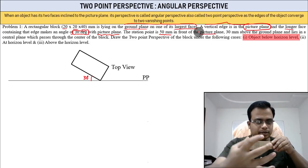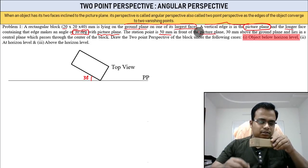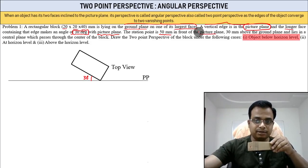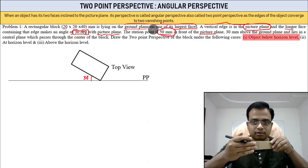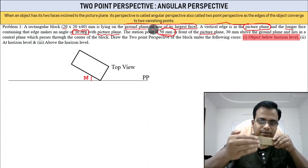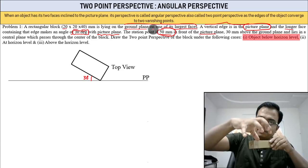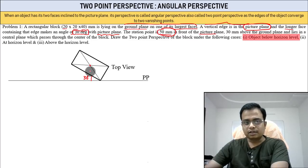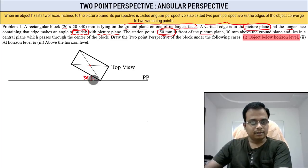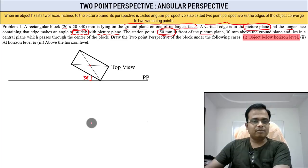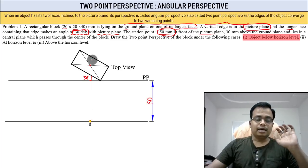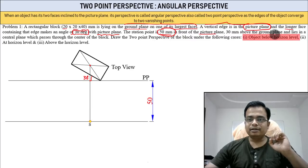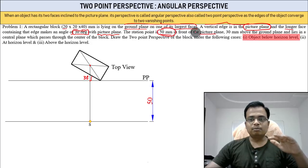Think about this: there's the object, then the picture plane, and you are the observer watching from the front. The station point — meaning you, the observer — is 50 millimeters away in front of the picture plane. This distance can be seen from the top. You need to mark a center first.